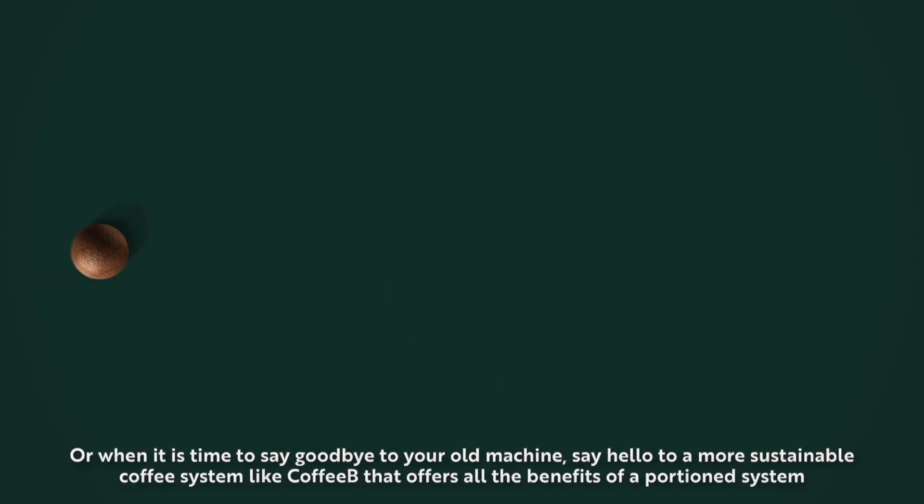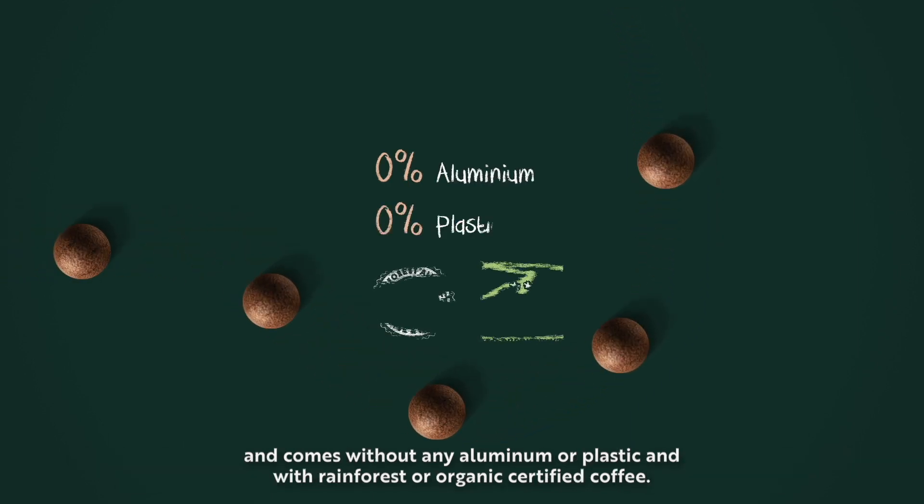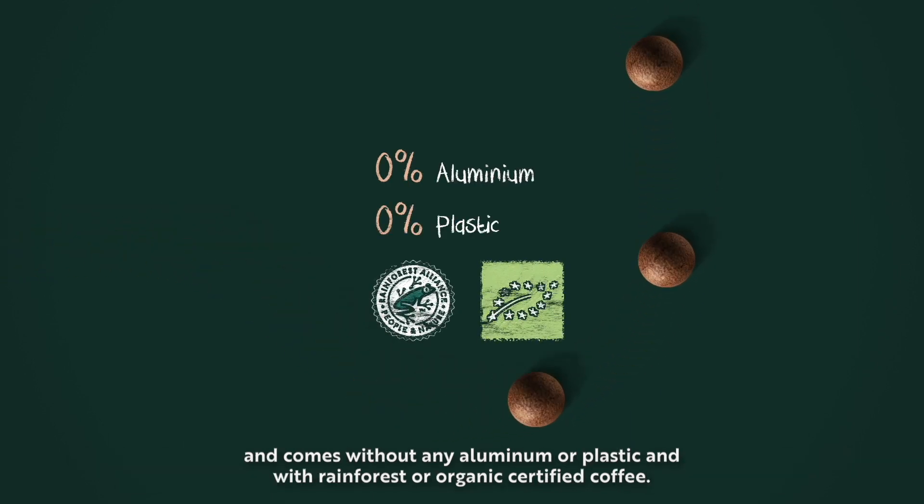Or when it's time to say goodbye to your old machine, say hello to a more sustainable coffee system like Coffee B that offers all the benefits of a portioned system and comes without any aluminum or plastic and with rainforest or organic certified coffee.